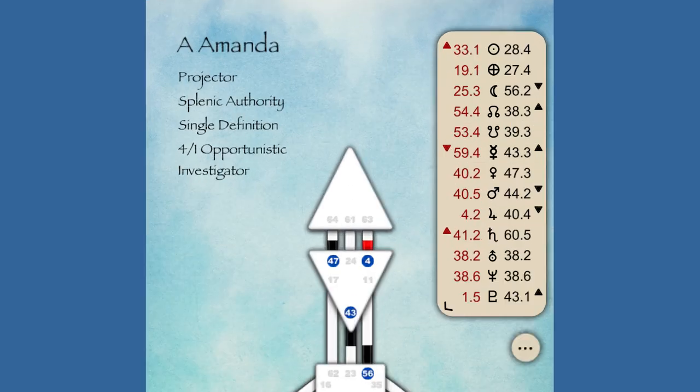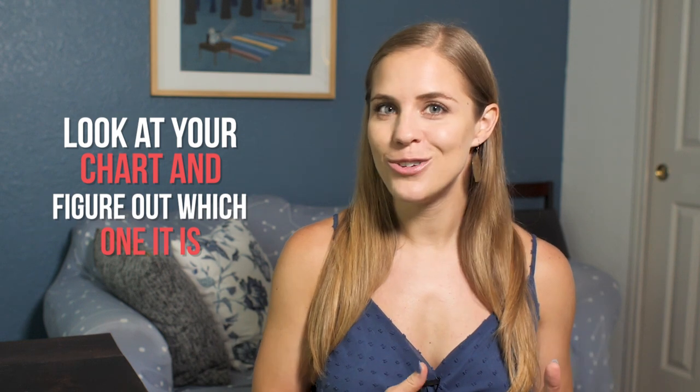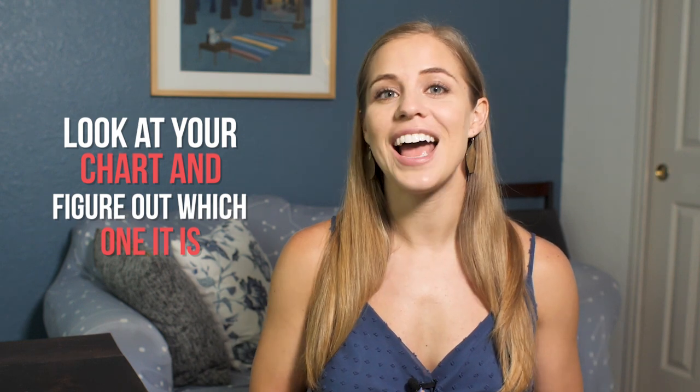Your profile is the number that, when you're looking at your chart, is going to look like a fraction. So this could be a 1/3, a 4/6, a 4/1, or a 6/2. Look at your chart and figure out which one it is, and we're going to use that to dive into your online persona.